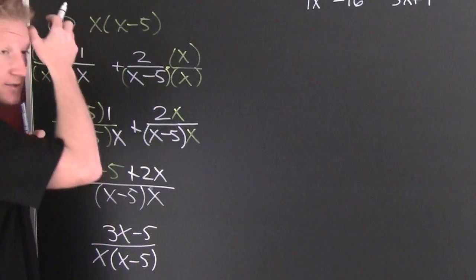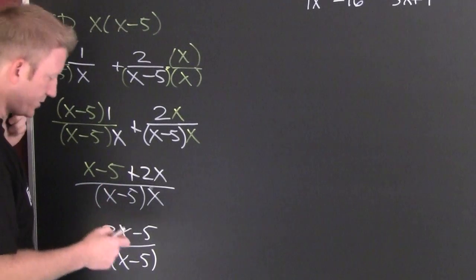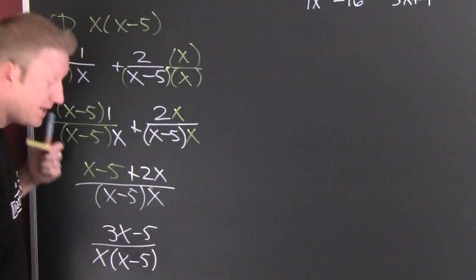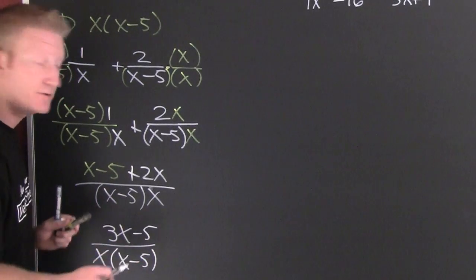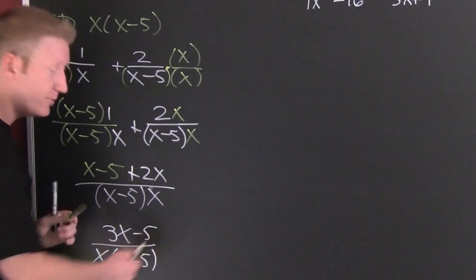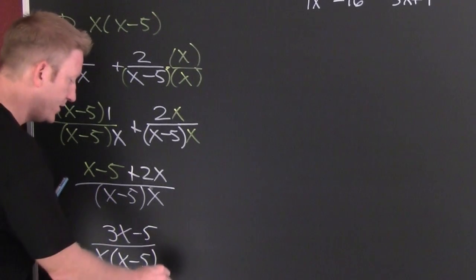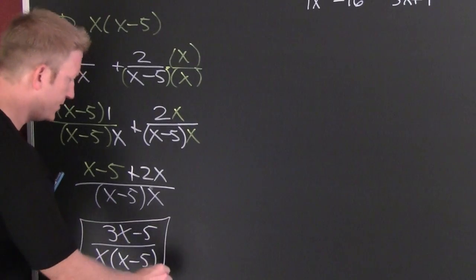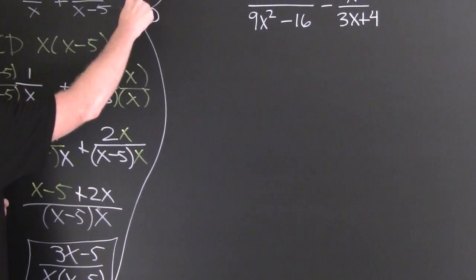3x minus 5 divided by x times x minus 5. And I can't reduce anything because I don't have a common factor in the numerator. I can only reduce when I have it written as a product. There's nothing I can do. That thing up there is prime.